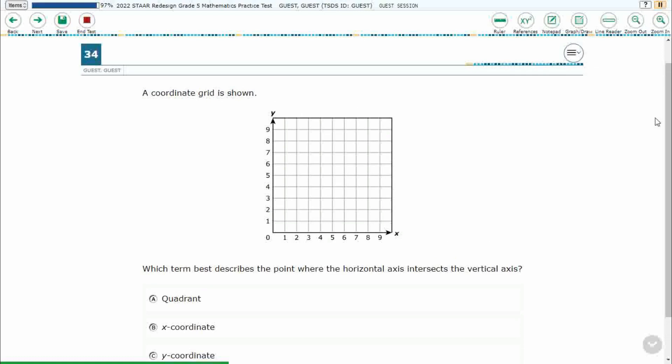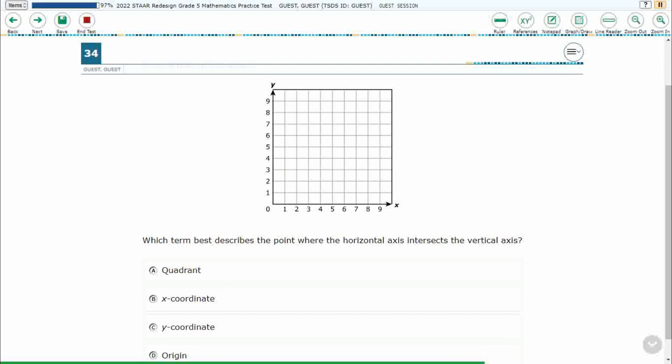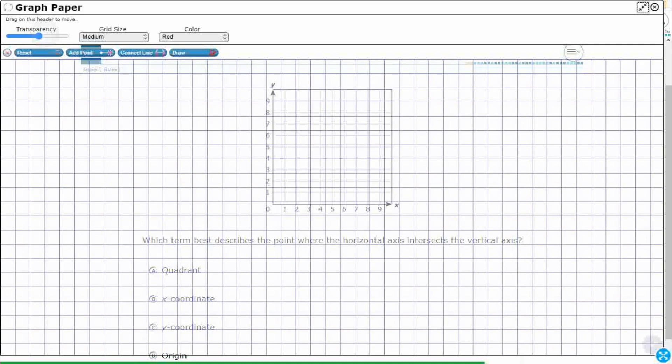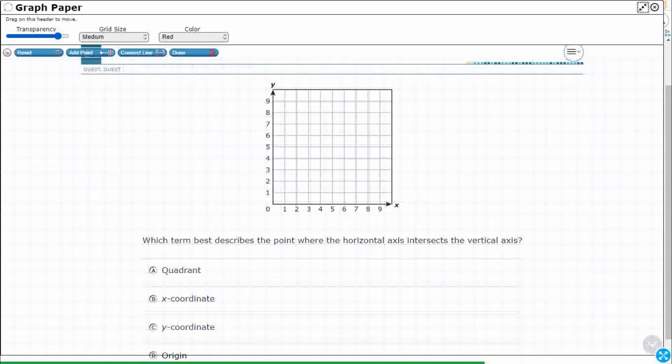All right, so we have a coordinate grid here and they just want us to describe and name one thing. So let's get our graph draw feature here, increase the transparency so we can see behind it, and let's see what they're asking us to describe here.